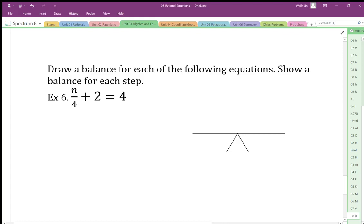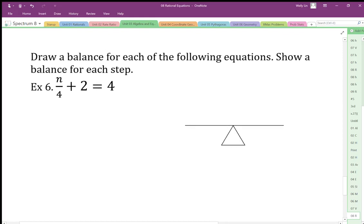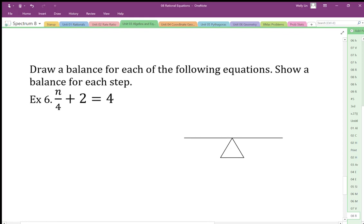So for these ones, we want to make sure we can draw a balance for these steps. Okay, so we're going to draw a balance. Now you could do fraction bars. I'm just going to do a fraction circle. So I'm going to show that I have a quarter of an n, so that circle represents one whole n. And then I'm going to use a couple boxes here. That's equal to 4.